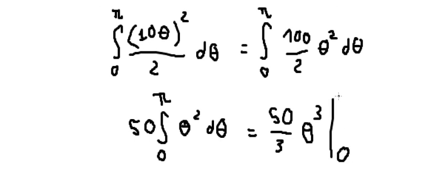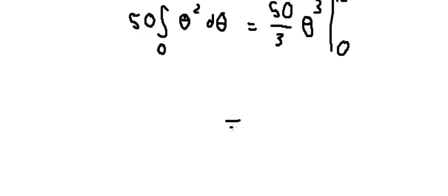From 0 to π. We put the numbers in, and we get 50 over 3, π cubed. That's the end. Thank you for watching.